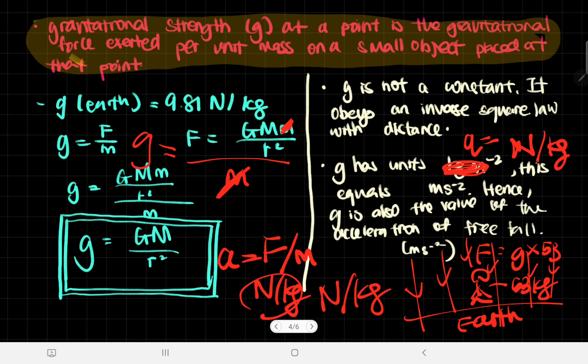Hence, g is also the value of the acceleration of free fall within this field that is created by this certain mass M. And so that's it for gravitational fields and also the gravitational field strength, which is denoted by this curvy g. Thank you for watching.